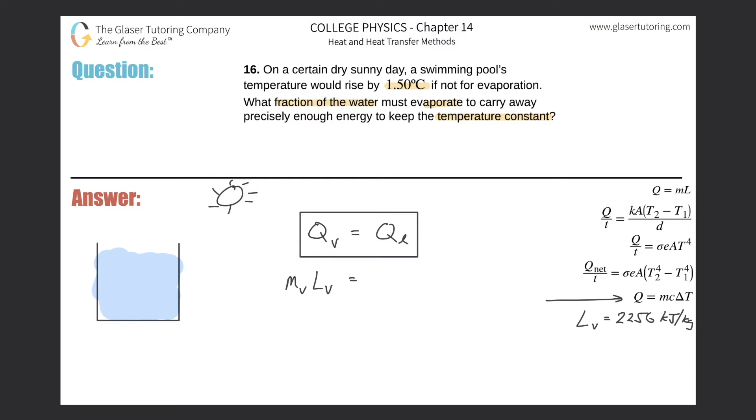And that should equal, for liquid water, when we're talking about changing temperatures of a liquid, solid, or gas, as long as it stays in the same state, we're talking about that formula over there. So this would be the mass of the water, liquid water in the pool, multiplied by the specific heat of that water, multiplied by the change in temperature.